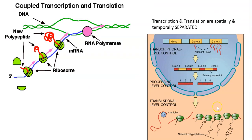In eukaryotes, as shown in the right-hand side of the diagram, transcription and translation are spatially separated — they occur in different spaces — and temporally separated, meaning they occur at different times. Transcription takes place first, and only after a particular time does the translation process take place. In other words, transcription and translation are not coupled in eukaryotic organisms.